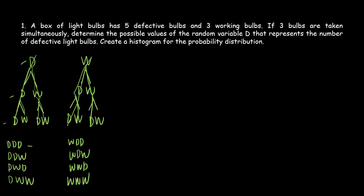In DDD we have 3 defective. In DDW we have 2 defective. In DWW we have 1 defective. And in WWW we have 0 defective. So the possible values of D are 0, 1, 2, and 3.